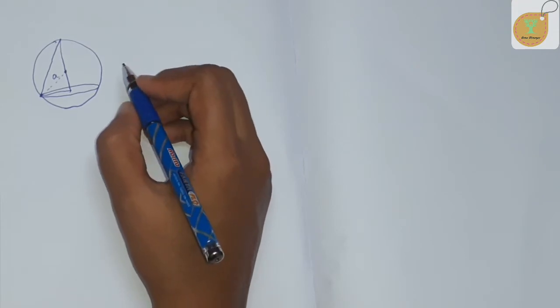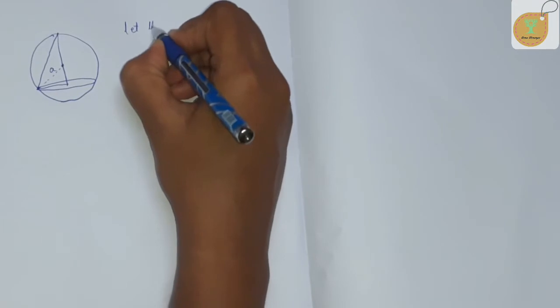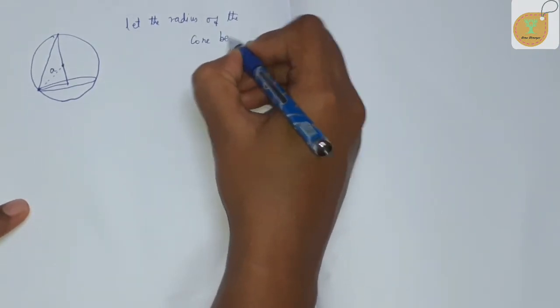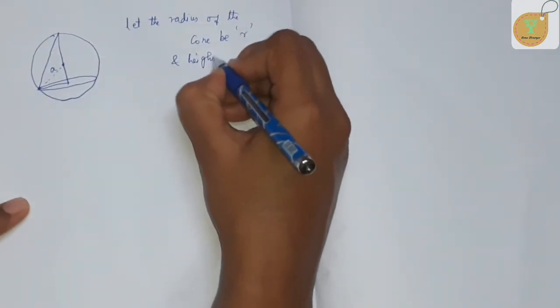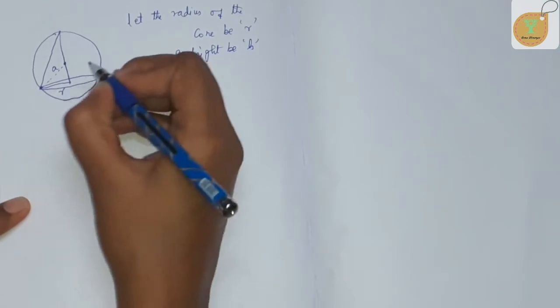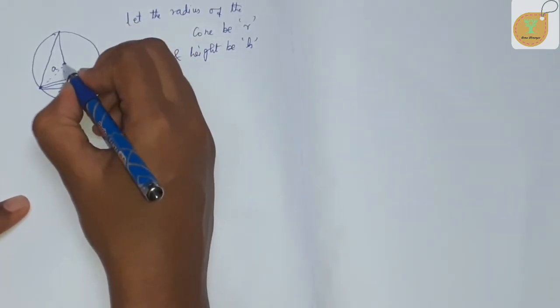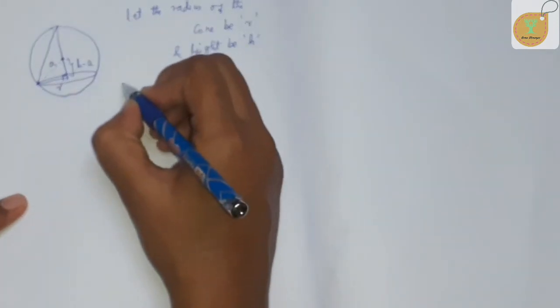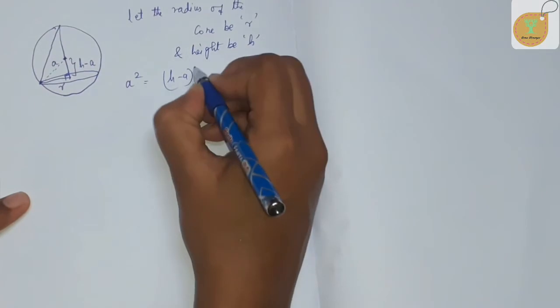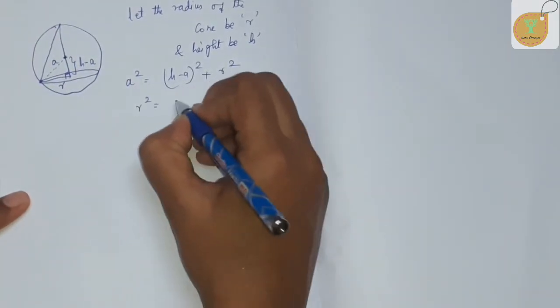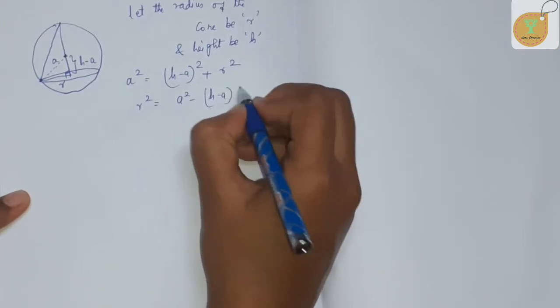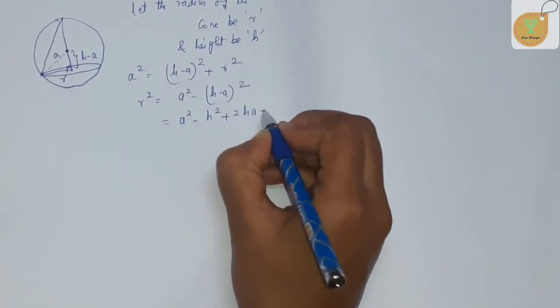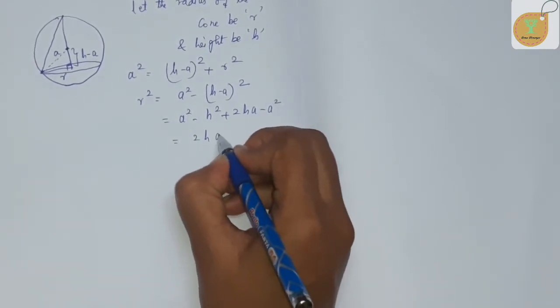Let the radius of the cone be R and height be H. This forms a right angle, therefore a² = (H - a)² + R². So R² = a² - (H - a)², which equals a² - H² + 2Ha - a². Therefore R² = 2Ha - H².